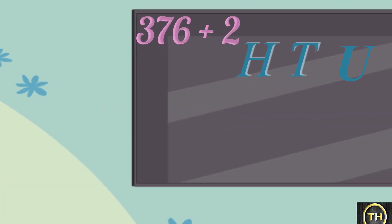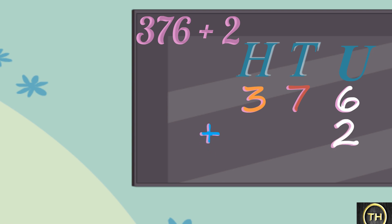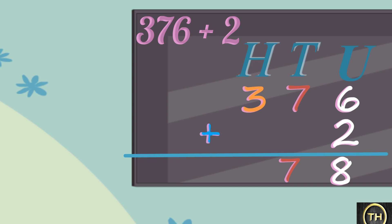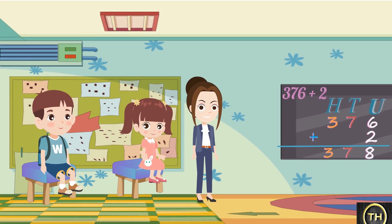Add 376 plus 2. If you arrange them in vertical order, write 3 in the hundreds place, 7 in the tens place and 6 in the units place, and write plus 2 in the units place. Now we begin our addition from the units place: 6 plus 2 is 8. In the tens place we have 7, so we write 7 as it is. In the hundreds place we have 3, so we write 3 as it is. So the answer is 378.